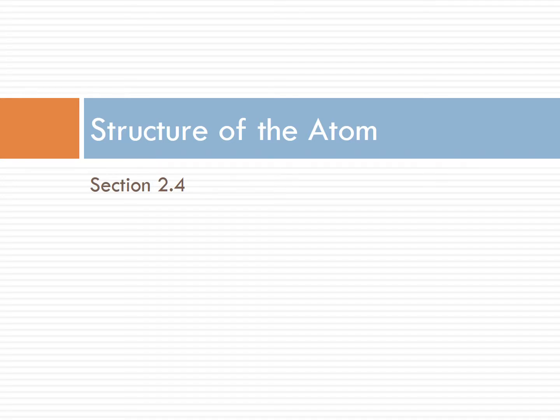This is ACE Chemistry section 2.4, the structure of the atom, which is probably one of the most important sections we are going to talk about in chapter 2, because it deals with the breaking down of the atom. And if you understand what the atom does, then you understand the properties of how it reacts. So let's get right into it.